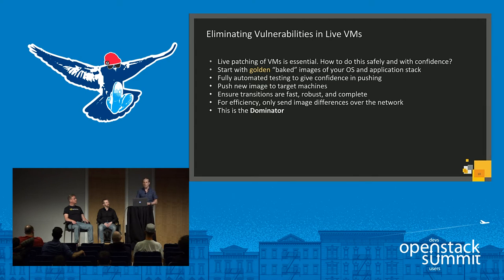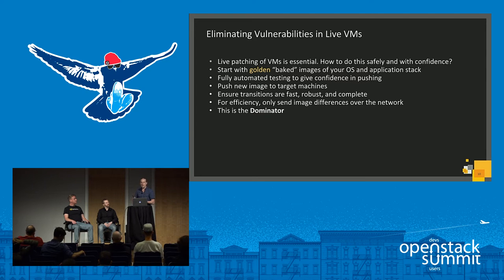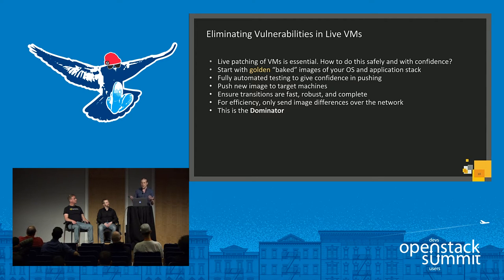So how do you build these images? You start with some kind of golden baked image. That contains your operating system and your application stack, including all configuration information specific to your application. Then you run it through a fully automated testing pipeline — with a sufficient number of regression tests, you'll have confidence that your image is of quality and is actually safe to start pushing. Then you actually push the image to all your target machines, using a technology that ensures the transitions are very fast, robust, and complete.